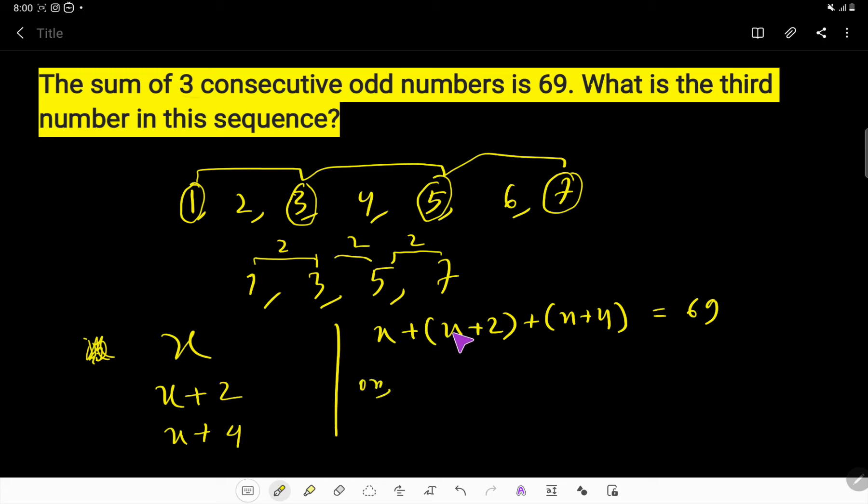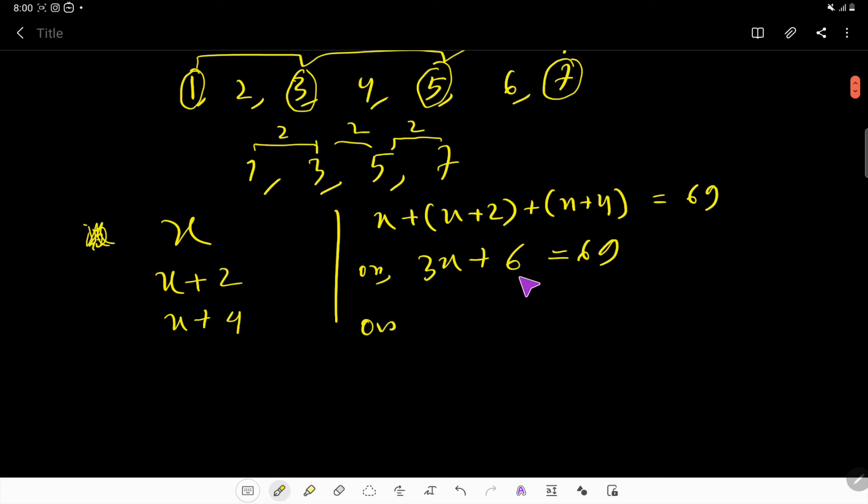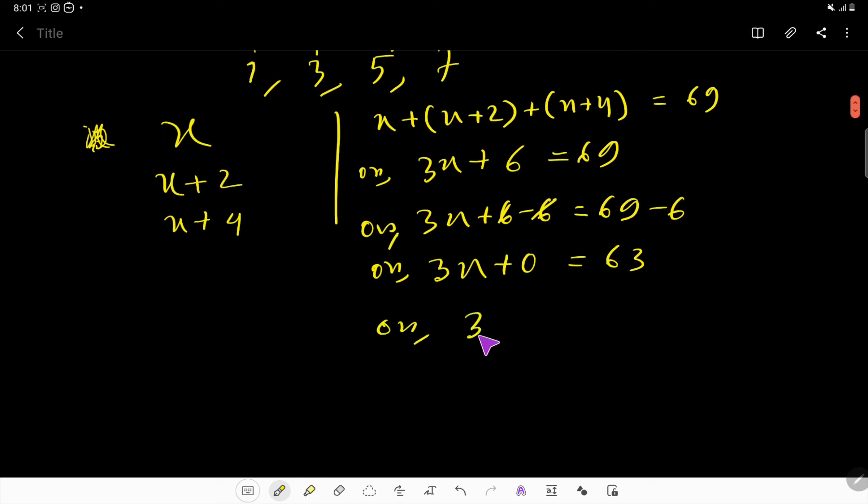So now solve to find the value for x. x plus x plus x, that is 3x, plus 2 plus 4, that is 6, equals 69. Here, now deduct 6 from both sides, so we are getting 3x plus 0, then 69 minus 6, that is 63. Or 3x equals 63.